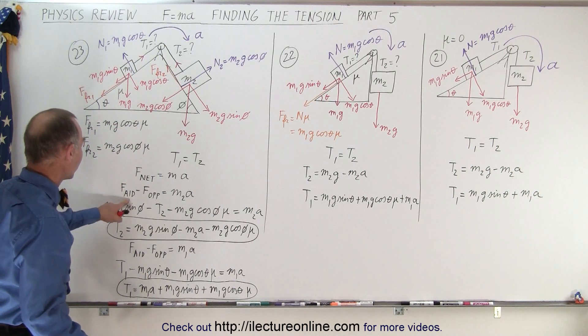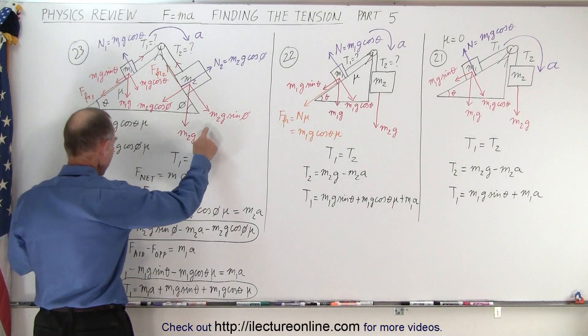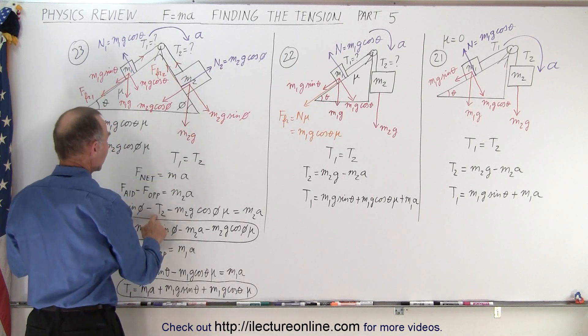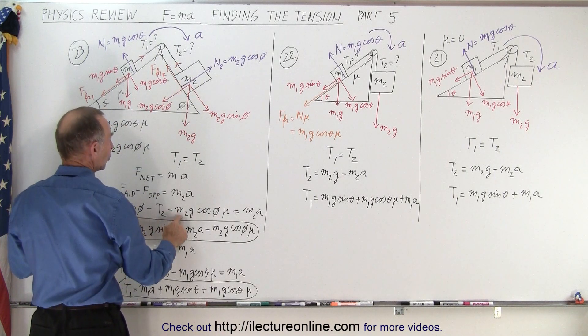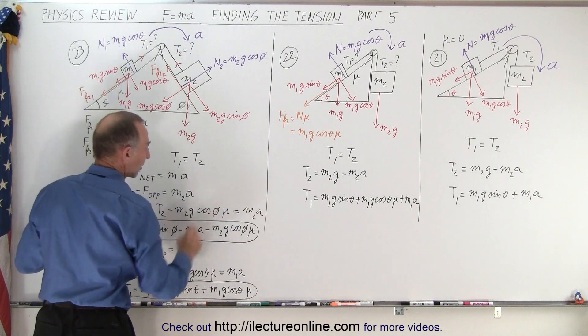M2G sine phi will aid the acceleration. So it's the forces aiding minus the forces opposing. So M2G sine phi is aiding the acceleration. T2 is opposing and M2G cosine phi mu is opposing as well. And that must equal the mass times acceleration. Solving that for T2 we get this.